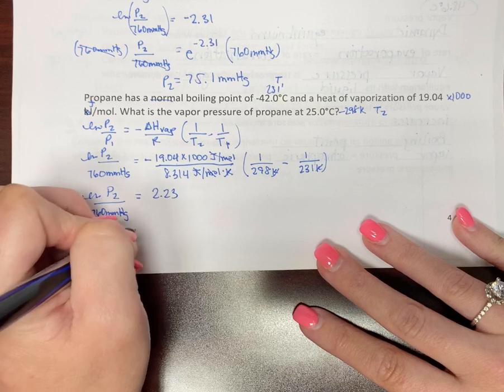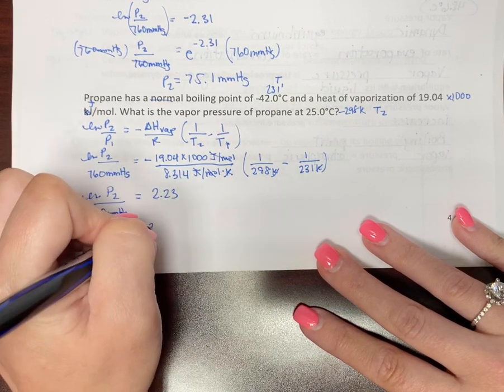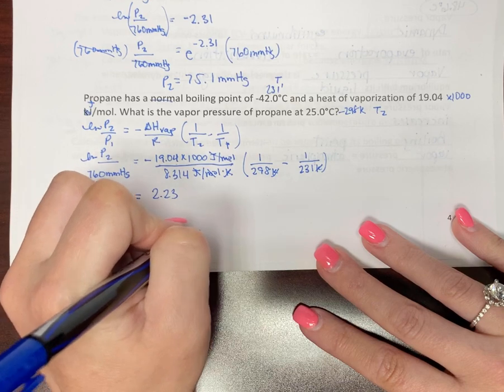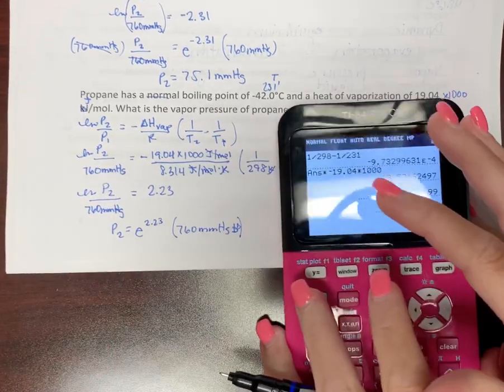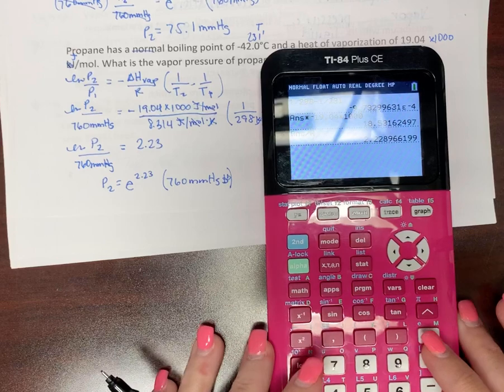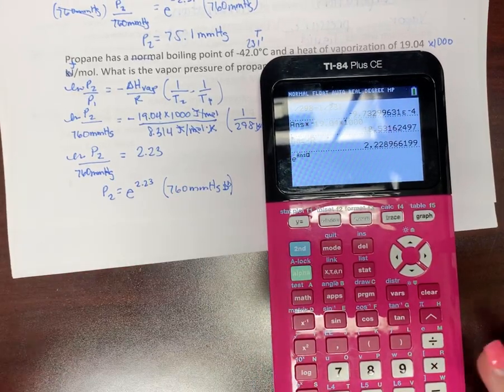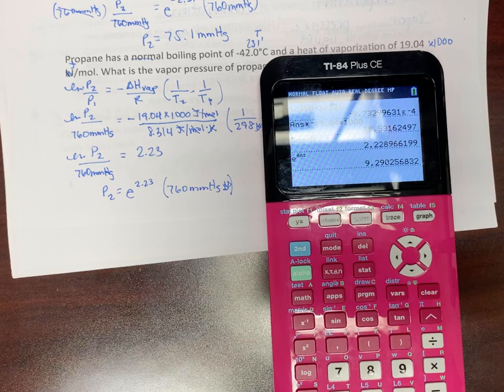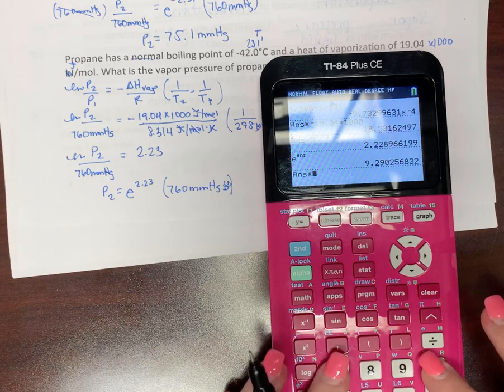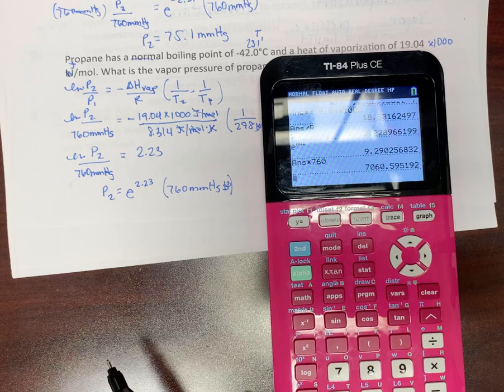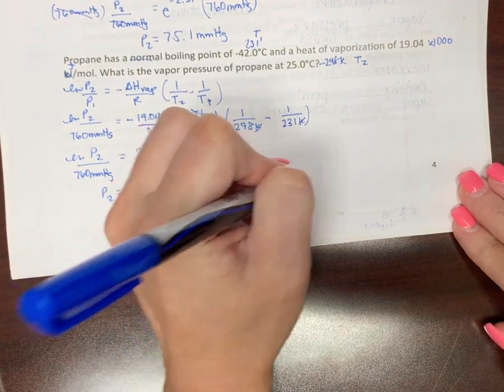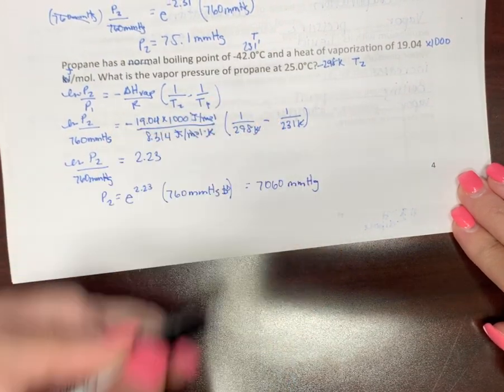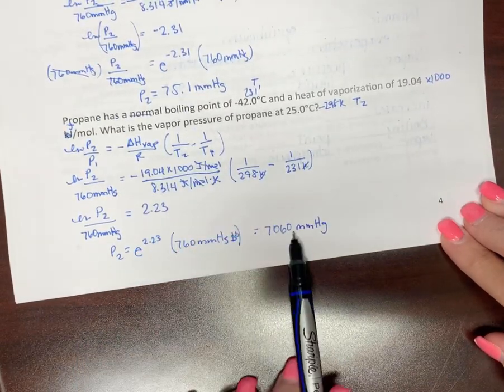So now that means P2 equals undo the natural log, 2.23, then multiply by 760 millimeters of mercury. So I'm just going to do, again, E to the whole answer. So again, how you get this might be a little bit different. And now that means 760. Ooh, that is a very high pressure. Look at that. So that is 7060 millimeters of mercury. So notice this is a very low vapor pressure. This is a very high vapor pressure.